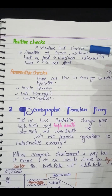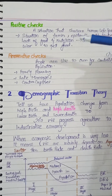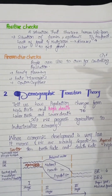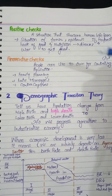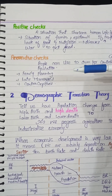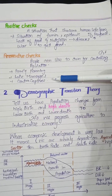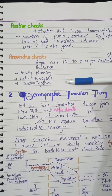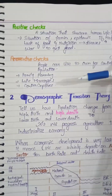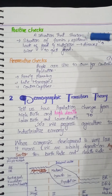Now, what can people use to control population? Family planning, late marriages, and contraceptives — these are preventive methods which can control the population. This was our Malthusian theory, which was related to food supply and population.